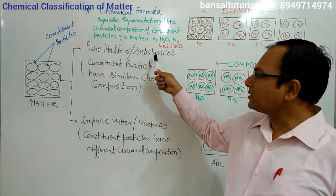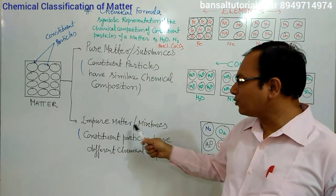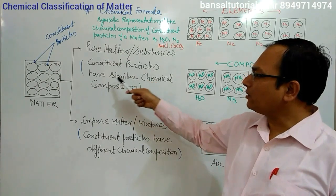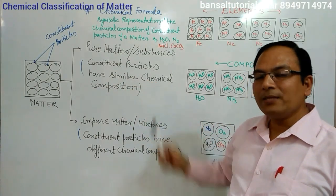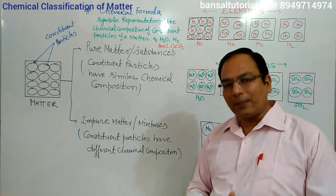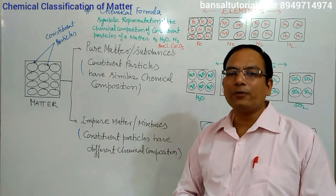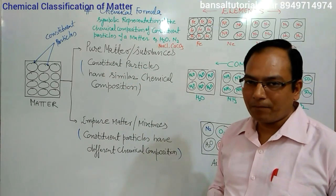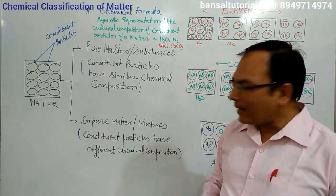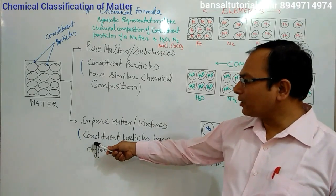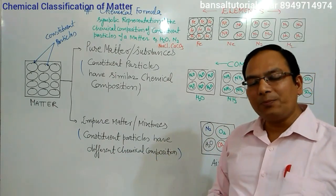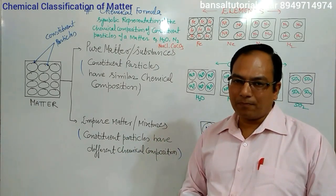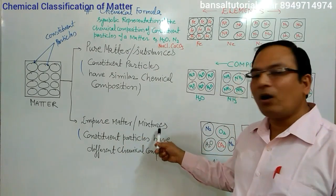Pure matter is also known as substances, and impure matter is also known as mixtures. The matter in which the constituent particles have similar chemical compositions — meaning they are composed of the same kind of atoms — is called pure matter or substances. If the constituent particles have different chemical compositions, meaning the particles of that matter have different atoms, then the matter is called impure matter or mixtures.